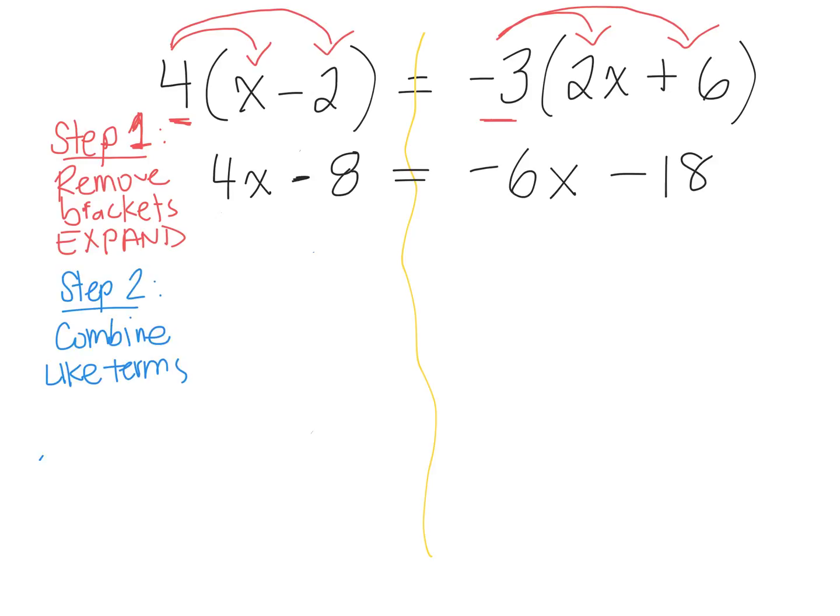So first we need to identify, which terms are the like terms? I have a 4x. What goes with 4x? Negative 6x. So those are like terms. And then I have negative 8 and negative 18. Those are the constant terms. So we're going to leave 4x on the left side. So that stays as 4x. I did not move that around. I didn't get rid of it. It's 4x.